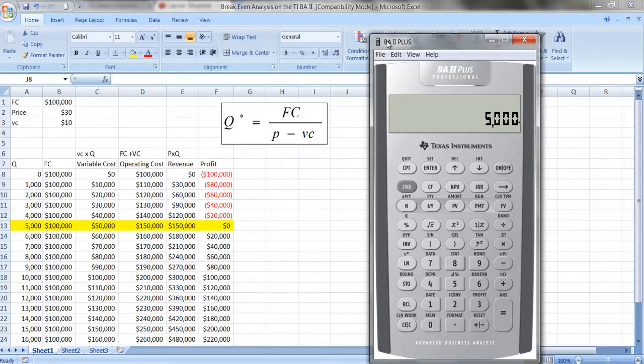Now what's nice about the BA2 plus calculator, and this is really why I'm doing this video, I want to show you that there's actually a function here that does this for you. If you hit second and the sixth key above it is breakeven, you get this worksheet here. If you want to clear the worksheet, you'd hit second, clear worksheet.